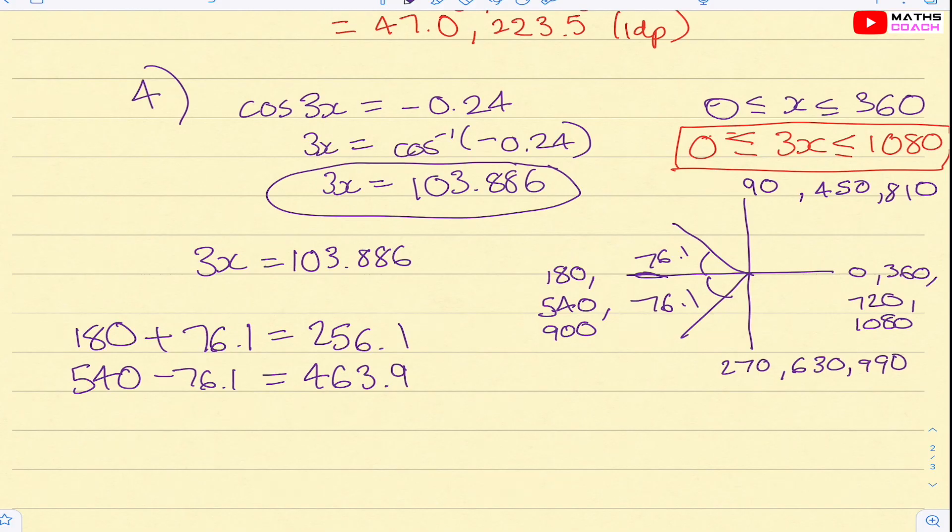And our final solution is we've got 900, because this is now we're going on our third round. So we've hit this point, 720. We're coming back on ourselves, so we've got 900. So we're going to have 900 minus 76.1 and 900 add that. So 900 minus 76.1 gives me 823.9, and then 900 add 76.1, which gives me 976.1.